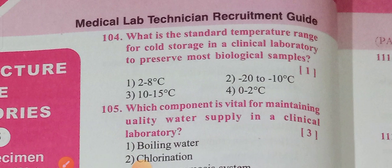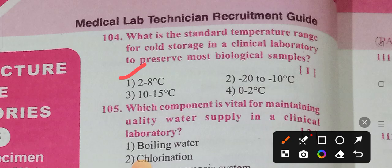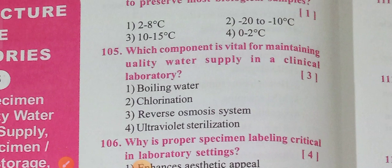What is the standard temperature range for cold storage in a clinical laboratory? The options are: 2 to 8 degrees centigrade, minus 22, minus 10, and 0 to 2 degrees centigrade. The correct answer is 2 to 8 degrees centigrade. This is the ideal standard temperature to preserve most biological samples. Option 1 is correct. Even for cold storage of vaccines, we maintain 2 to 8 degrees centigrade.